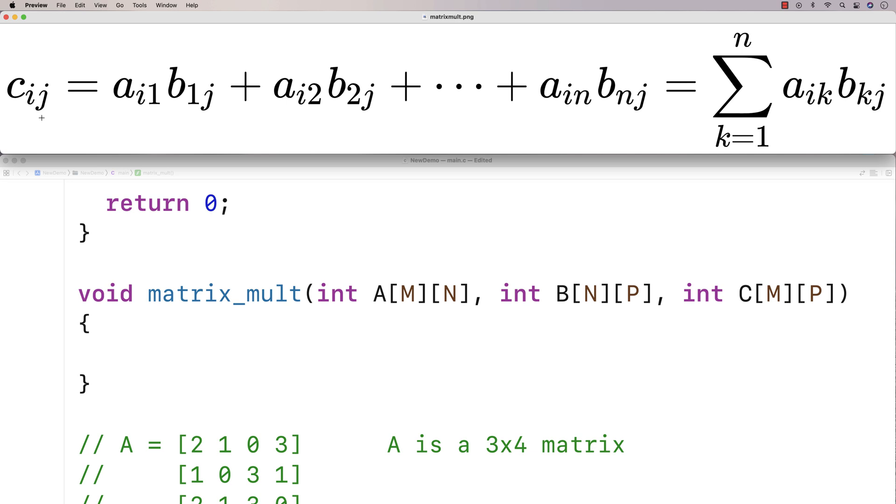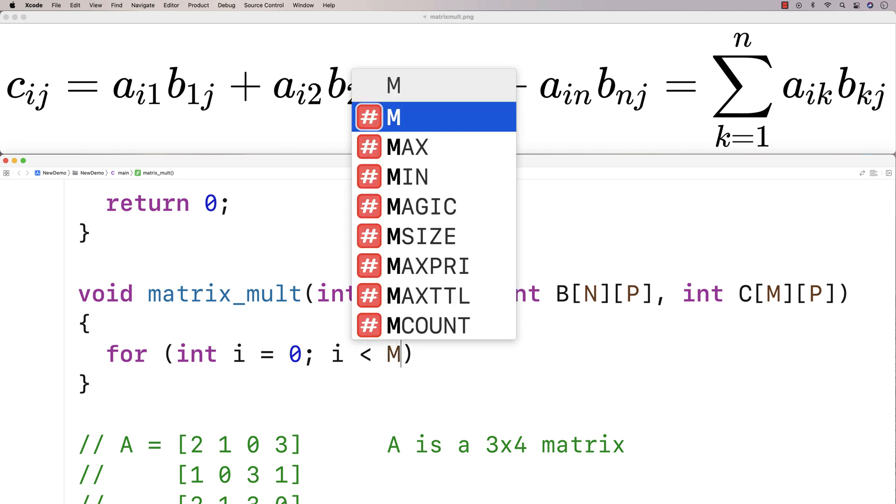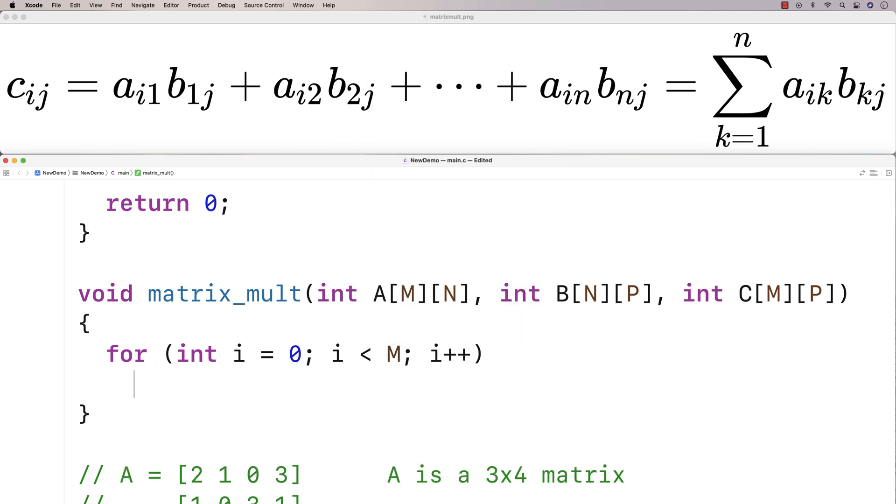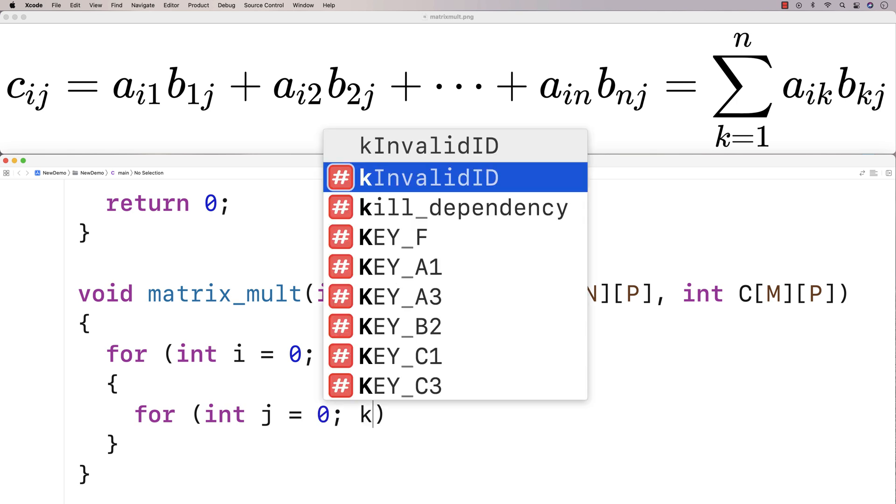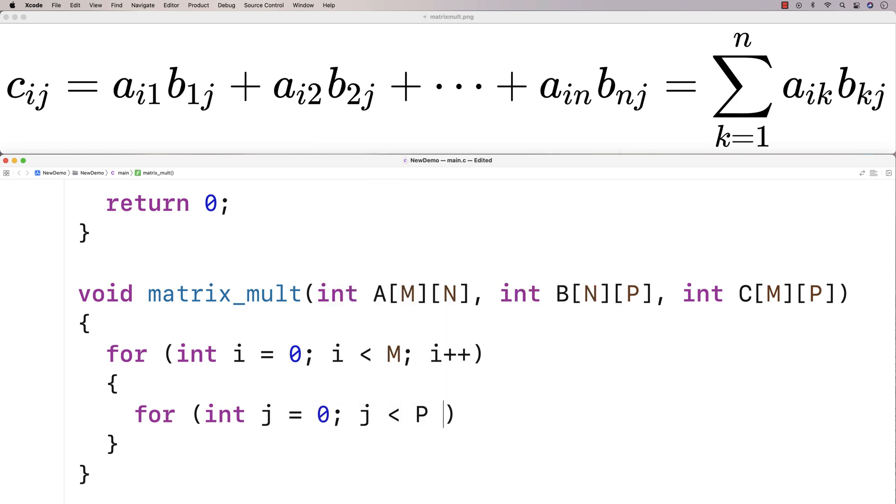And we use i and j as counter variables for those things. So here I'll say for (int i = 0; i < M; i++). And then for (int j = 0; j < P; j++).